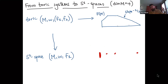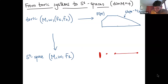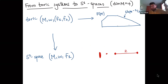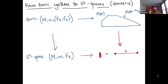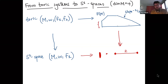You can read the Karshon graph directly off the Delzant polytope. A vertical wall in the polytope becomes a fat vertex. All other vertices not incident on a vertical wall become regular vertices. Every edge with non-integer slope — like slope minus one half — becomes an edge in the Karshon graph, labeled with the denominator of that slope fraction.